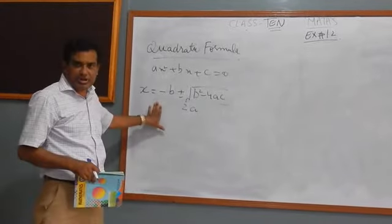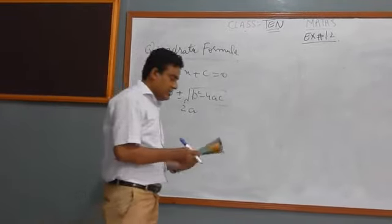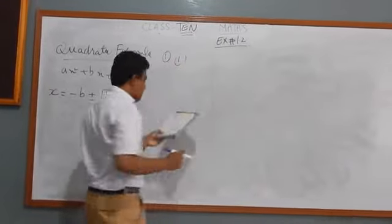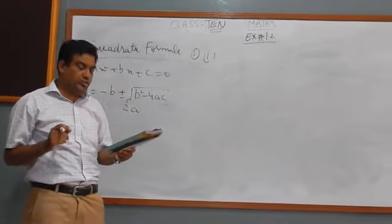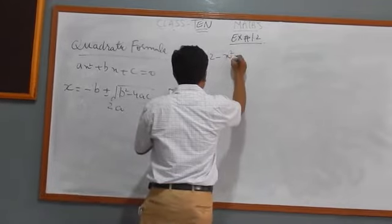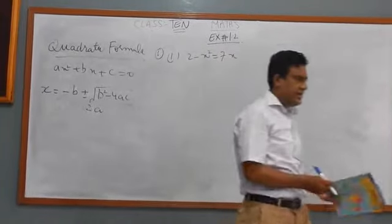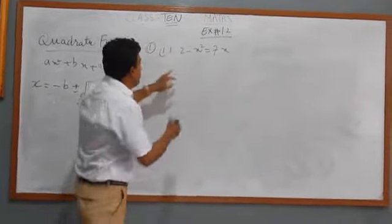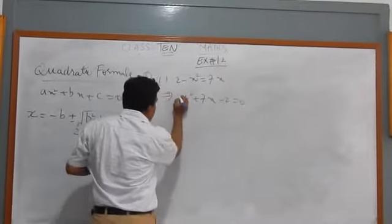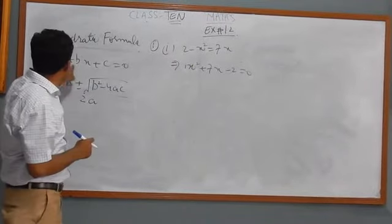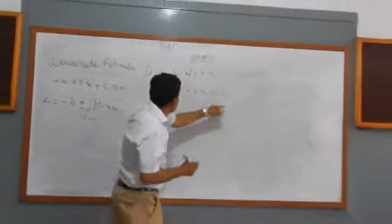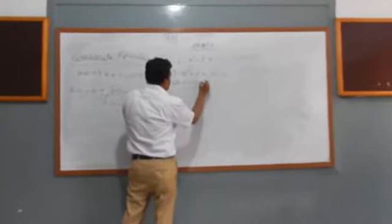Solve the following using Quadratic Formula. 2 minus x square is equal to 7x. Now we convert to standard form: x square plus 7x minus 2 equal to 0. This is the form ax square plus bx plus c equal to 0, which means a equals 1, b equals 7, c equals minus 2. Now we apply the formula: x equals minus b plus minus under root b square minus 4ac over 2a.